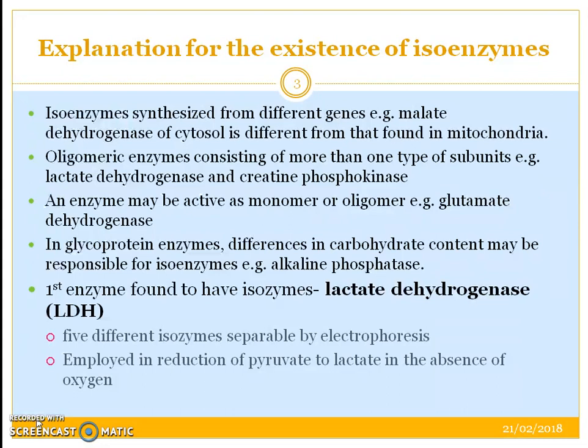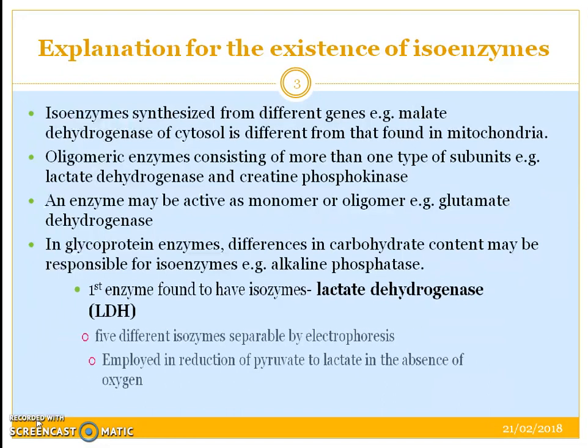The first enzyme found to have properties of isoenzymes was lactate dehydrogenase. It has five different isoenzymes as mentioned earlier, and they can be separated by electrophoresis. They are employed in the reduction of pyruvate to lactate in the absence of oxygen.